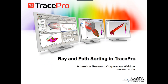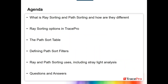So let's get into today's webinar. As Mike mentioned, the webinar today is going to be on the ray and path sorting features in TracePro. Our agenda: we're going to start by looking at what is ray and path sorting and how are they different. We'll look at the options for ray sorting, then talk about the path sort table, and look at defining path sort filters — a new feature in TracePro 7.8. We'll also wrap up with discussion on ray and path sorting uses, including stray light analysis, then finish with Q&A.